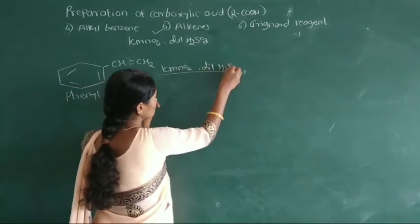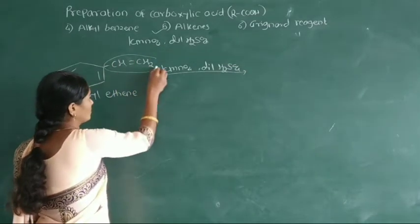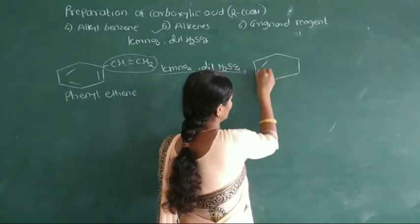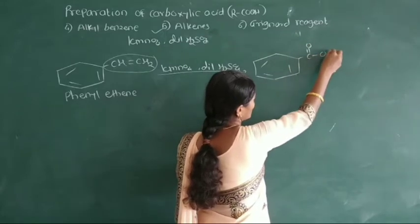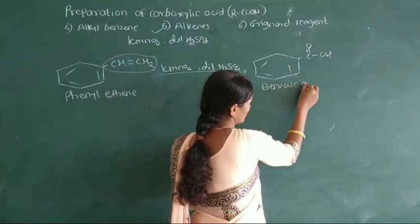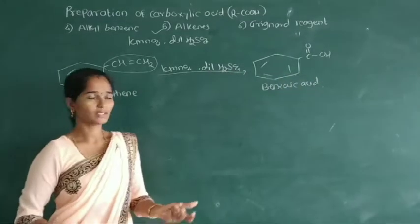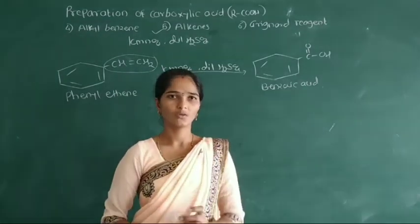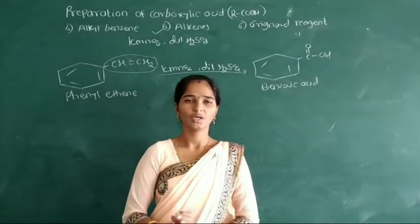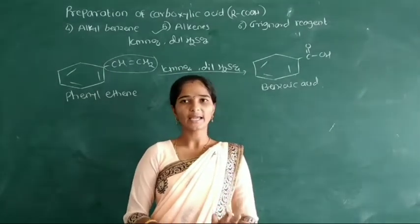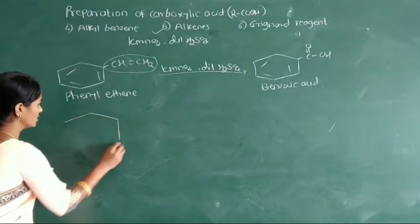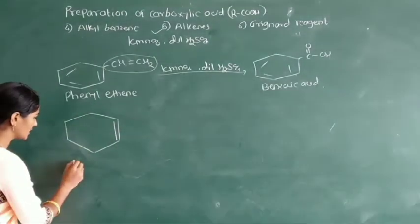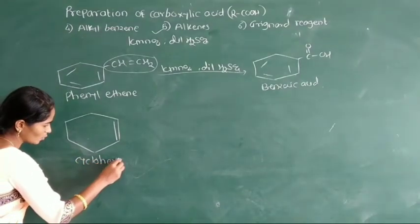This ethyl group gets converted into the carboxyl group — here formation of COOH, the name of this compound is benzoic acid. That means this entire alkyl group attached to the benzene ring is converted into the carboxyl group. The double bond is present in a cyclic ring — suppose here a six-membered cyclic ring with one double bond present in the cyclic ring — it is called as cyclohexene.